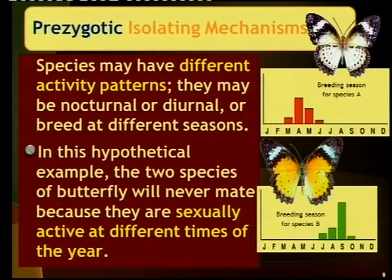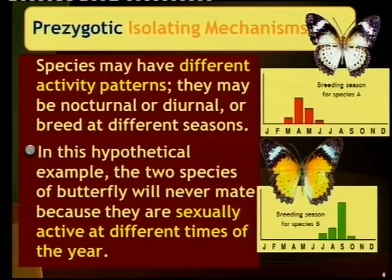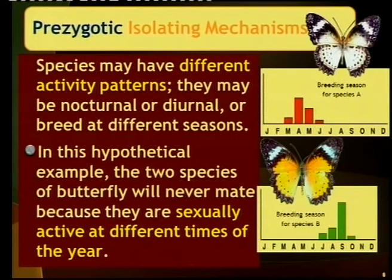We get two types of reproductive isolating mechanisms. The first is prezygotic, and we're also going to talk about postzygotic. Remember, a zygote is the result of fertilization — when a sperm cell fuses with an egg cell. So prezygotic refers to anything before fertilization, anything that stops two individuals from mating before fertilization occurs. Postzygotic mechanisms occur after fertilization.